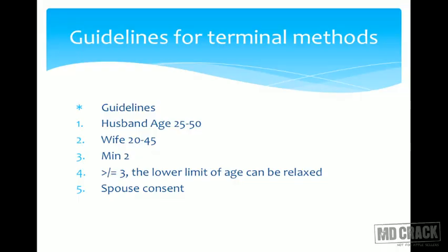In terminal methods, let us first see what the guidelines are. The husband's age should be in the range of 25 to 50 years, the wife's age should be in the range of 20 to 45 years, there must be at least a minimum of two healthy living children for the couple. If the number of healthy living children is three or more, the upper age guidance can be relaxed, and there should be spouse consent. These are the guidelines for undergoing the permanent methods.